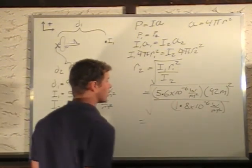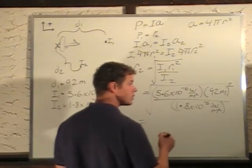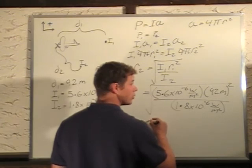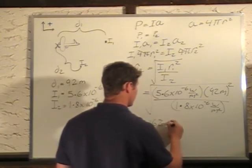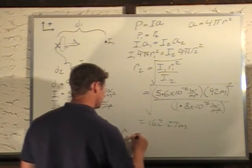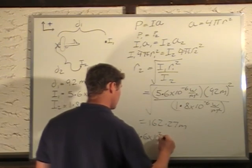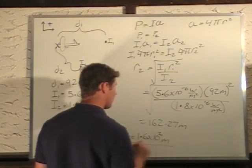If we plug all that into our calculator, canceling out our units gives us meters. Our radius r2 is equal to 162.27 meters. If we round that to two significant digits, we get 1.6 times 10 to the 2 meters. Final answer.